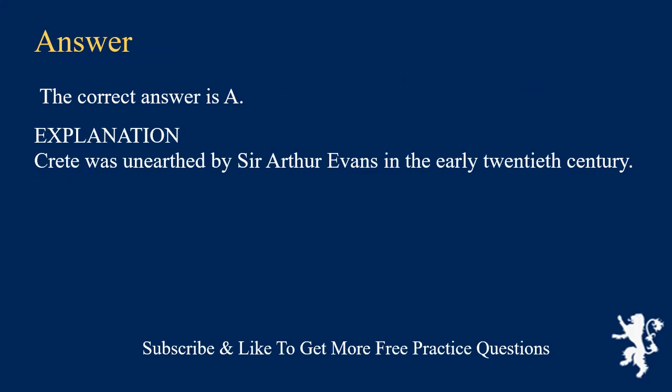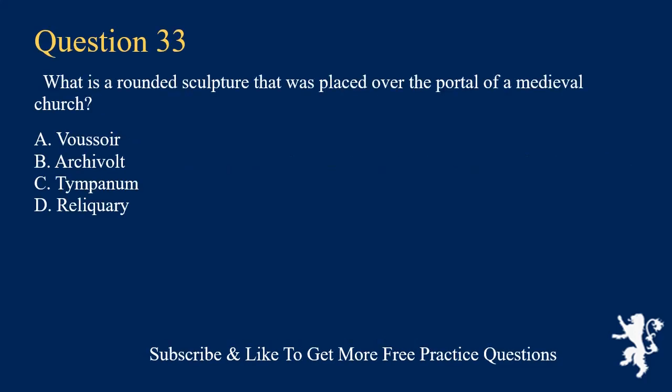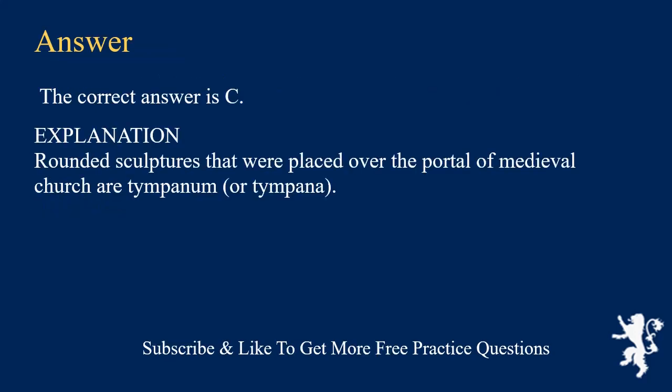Explanation: Crete was unearthed by Sir Arthur Evans in the early 20th century. What is a rounded sculpture that was placed over the portal of a medieval church? A. Voussoir. B. Archivolt. C. Tympanum. D. Reliquary. The correct answer is C.